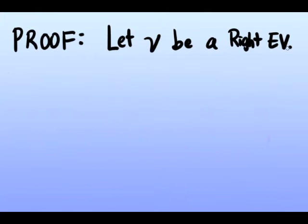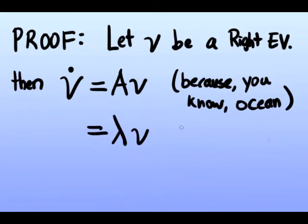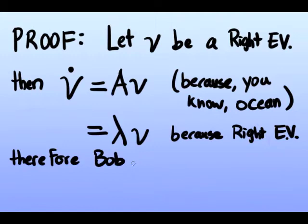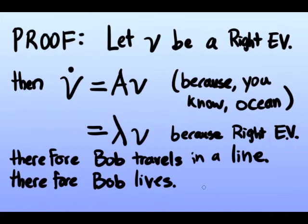Let's prove this. Proof: Let V be a right eigenvector of A. Then V dot equals AV, but AV also equals lambda V because V was a right eigenvector of the matrix A. Therefore, Bob travels in a straight line because V dot was shown to be a scalar multiple of V. Therefore, Bob lives.